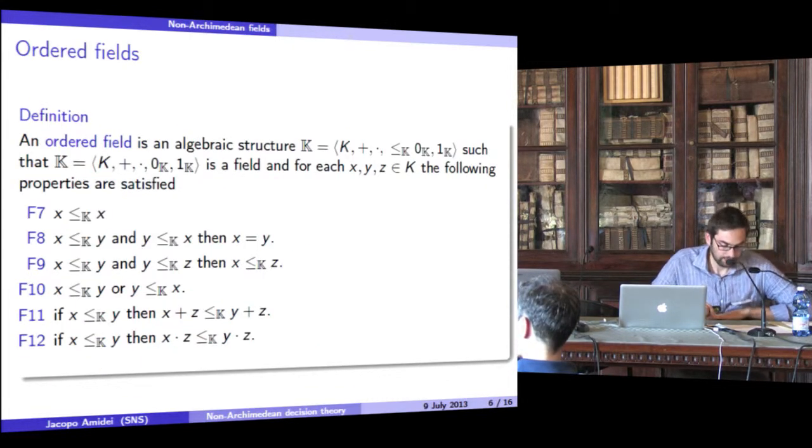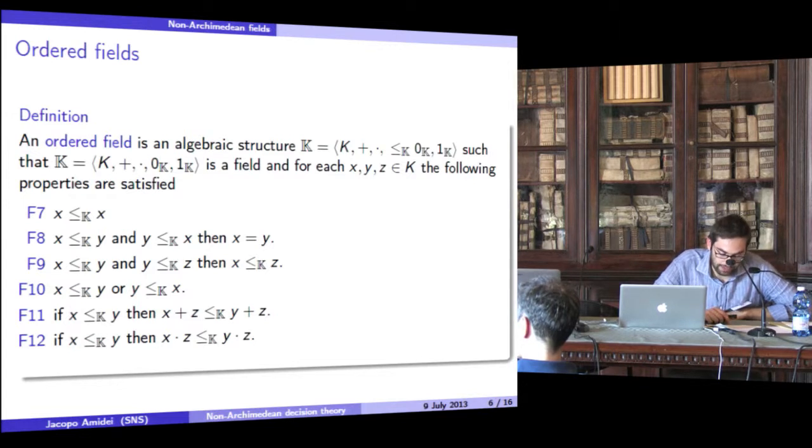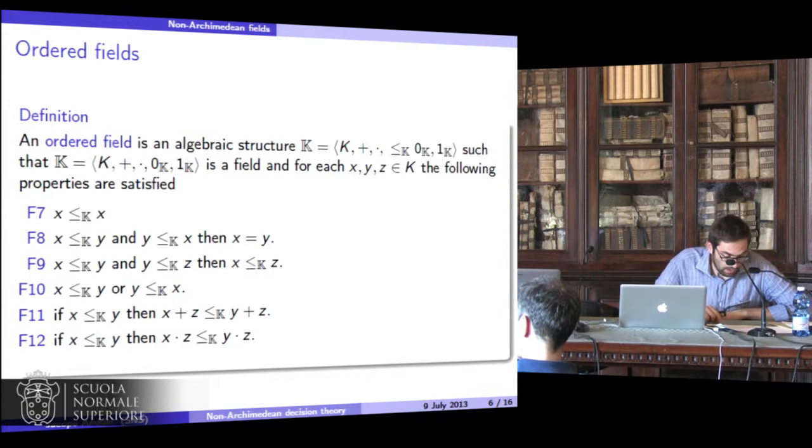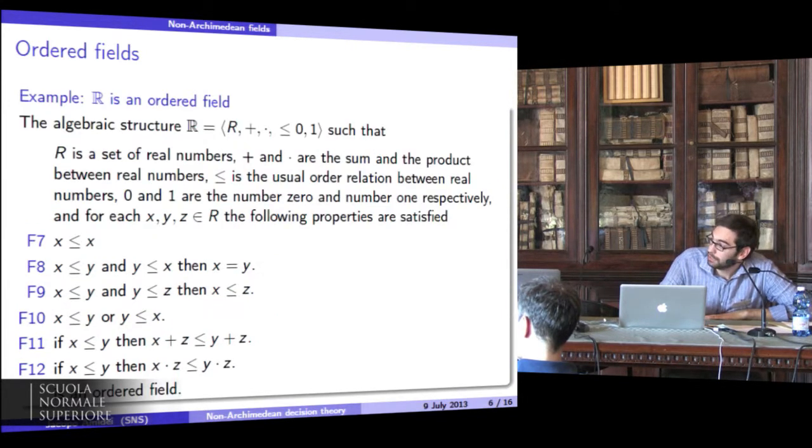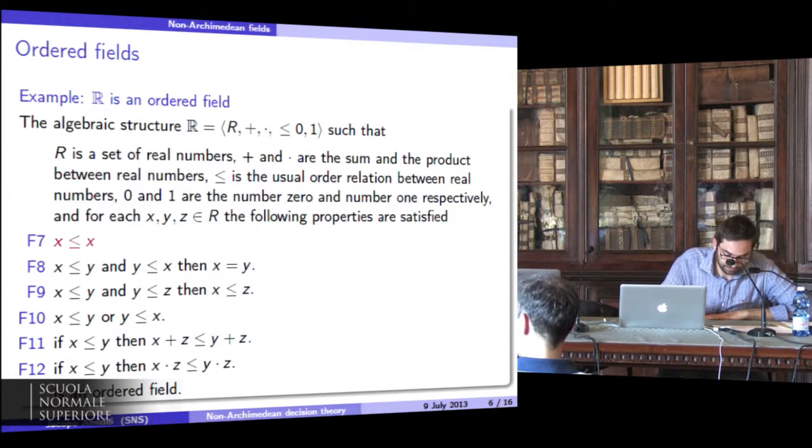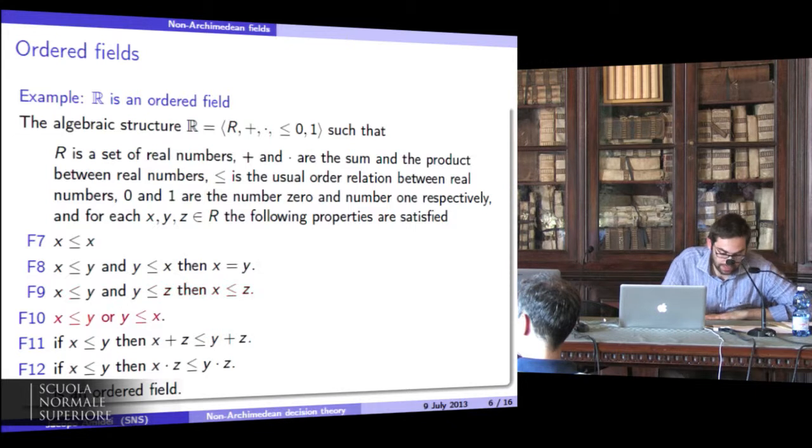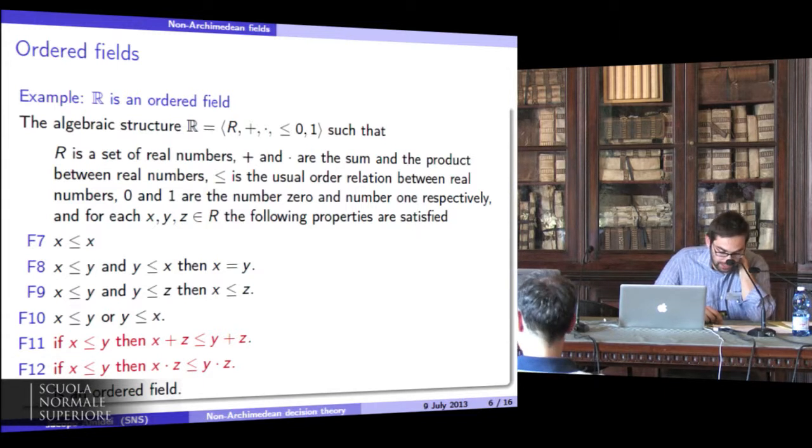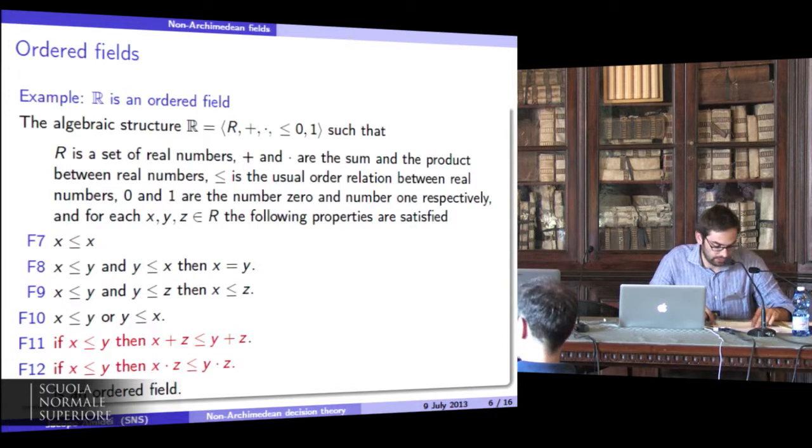An ordered field is a field in which a binary relation is defined that satisfies this axiom. A familiar ordered field is that of real numbers, where the binary relation is the usual order relation between real numbers. In fact, the usual order relation between real numbers is reflexive, symmetric, transitive, and total. Moreover, the sum and product between real numbers are compatible with this relation.